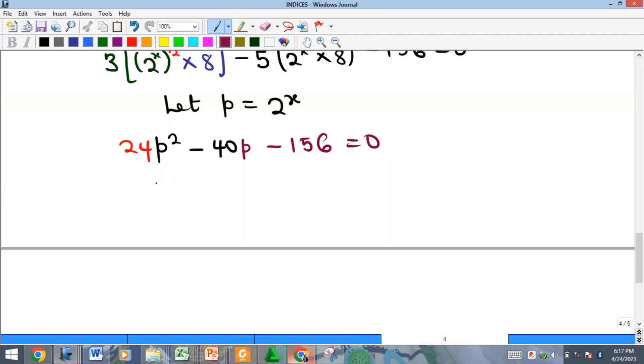First of all, there is a common term here that can divide through. 4 can do that, so if 4 divides through we'll get 6p squared.